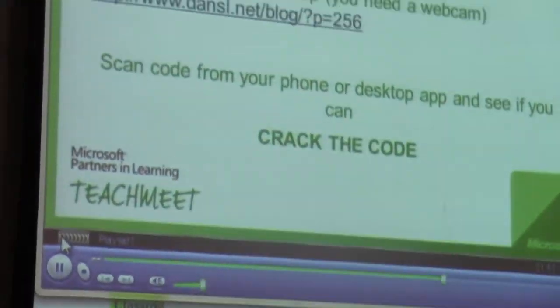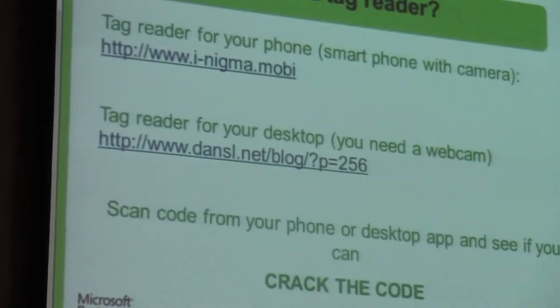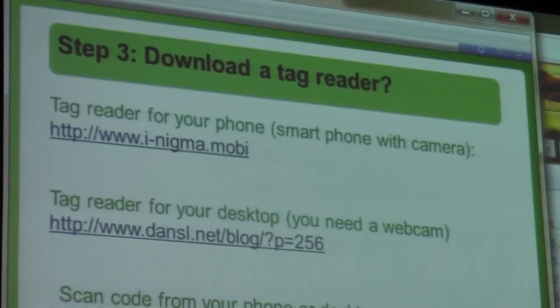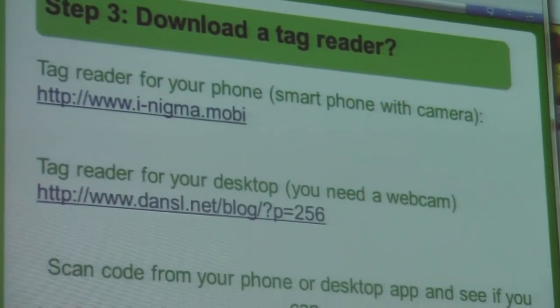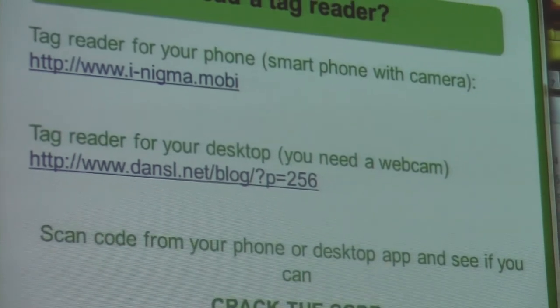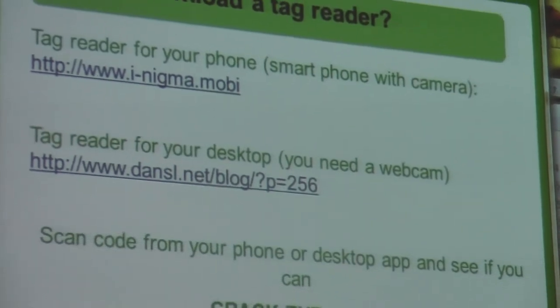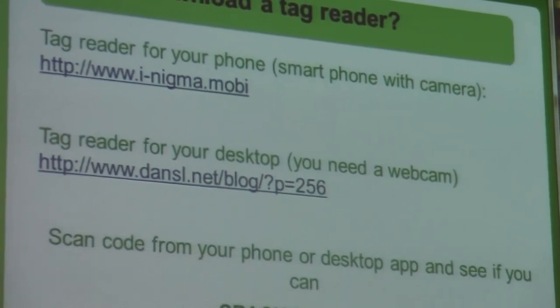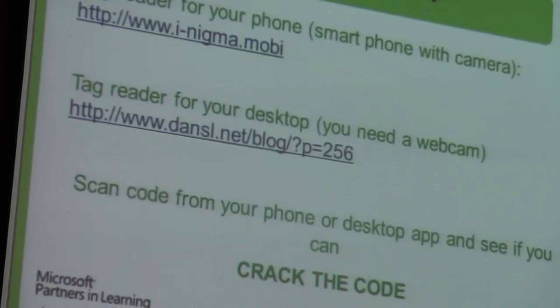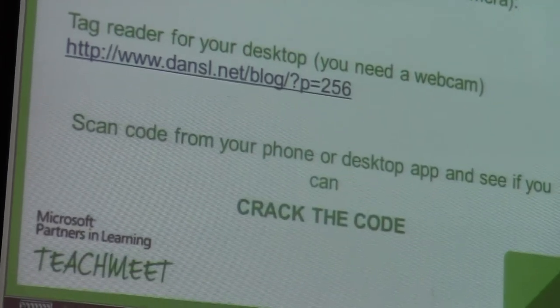In order to read it — for the kids to interpret the code — they need a reader. You can get a reader and download it onto your smartphone. Obviously you need a camera. For the younger children that might not have one, like grade one, we do have a Blackberry in some schools right now.